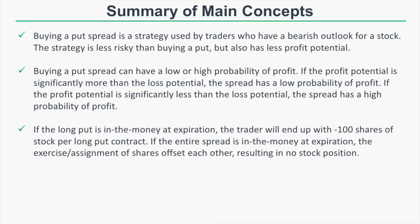To recap the main concepts: buying a put spread is used by traders with a bearish outlook. It's less risky than buying a put outright but also has less profit potential. The spread can have a low or high probability of profit — if profit potential is significantly more than loss potential, it's a low-probability position; if profit potential is significantly less than loss potential, it's a high-probability position. If only the long put is in the money at expiration, a trader ends up with negative 100 shares of stock per contract. If the entire spread is in the money, the exercise and assignment offset each other and no stock position is taken.